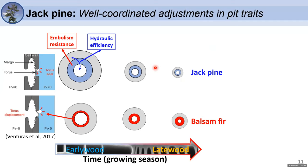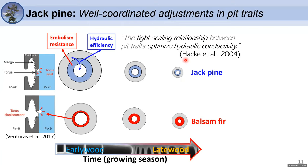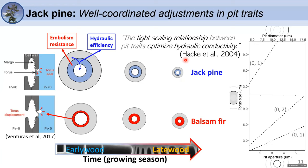Another important aspect is how tightly correlated these pit traits are. As Hacke noted, tight-scaling relationships between pit traits optimize hydraulic conductivity. Analyzing Jack Pine's pit trait correlation, we found an almost perfect correlation: for a given change in pit aperture, this information is transmitted like a chain reaction, changing the entire hydraulic architecture — a very well-coordinated system.